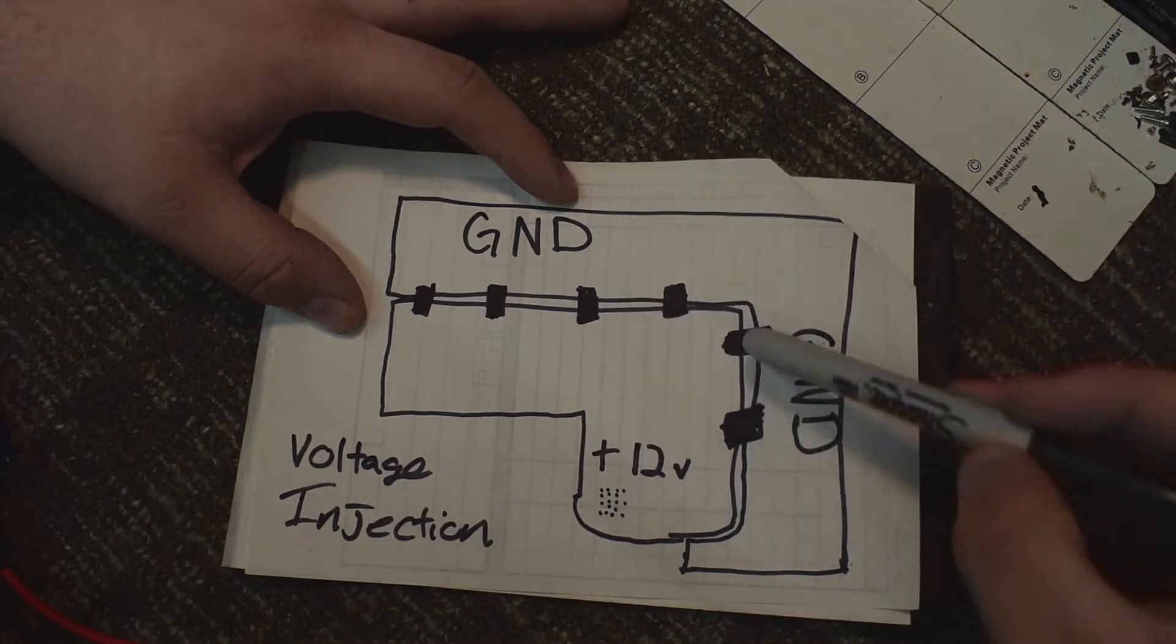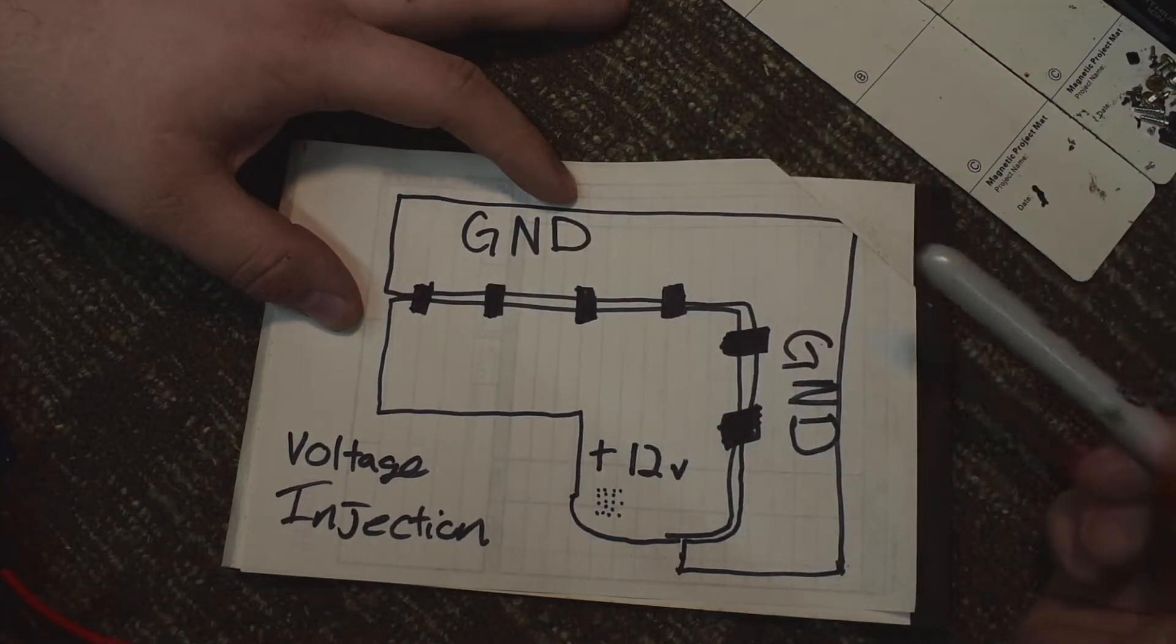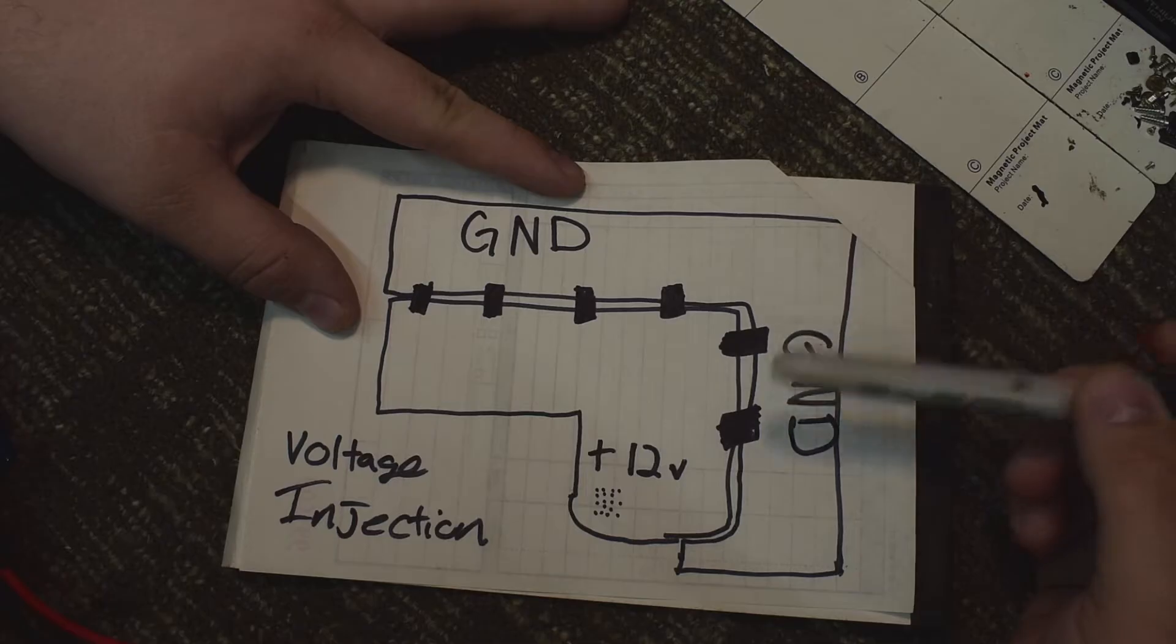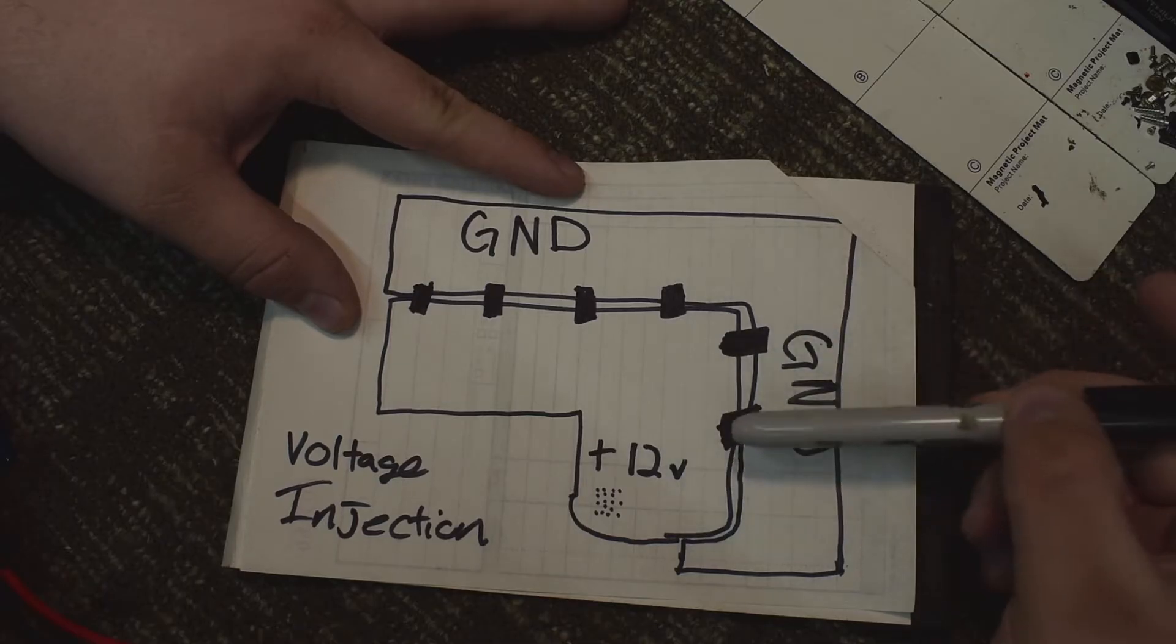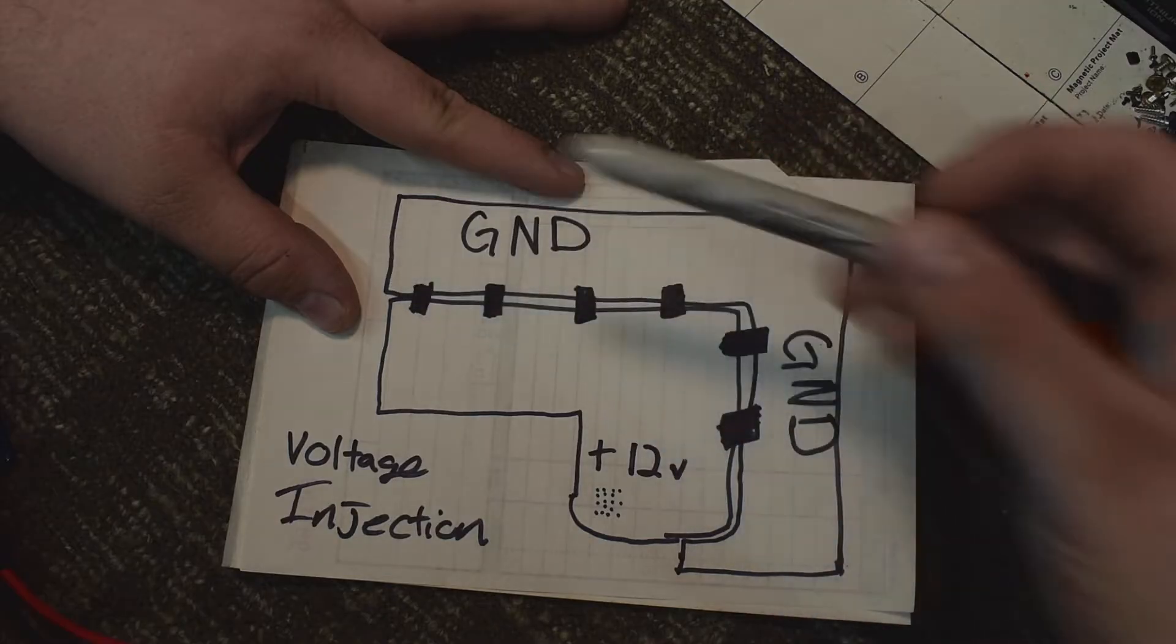So these blocks here are capacitors. This is how I'm going to demonstrate how voltage injection works and how you would find a shorted circuit. For this video we're going to imagine these blocks are capacitors.